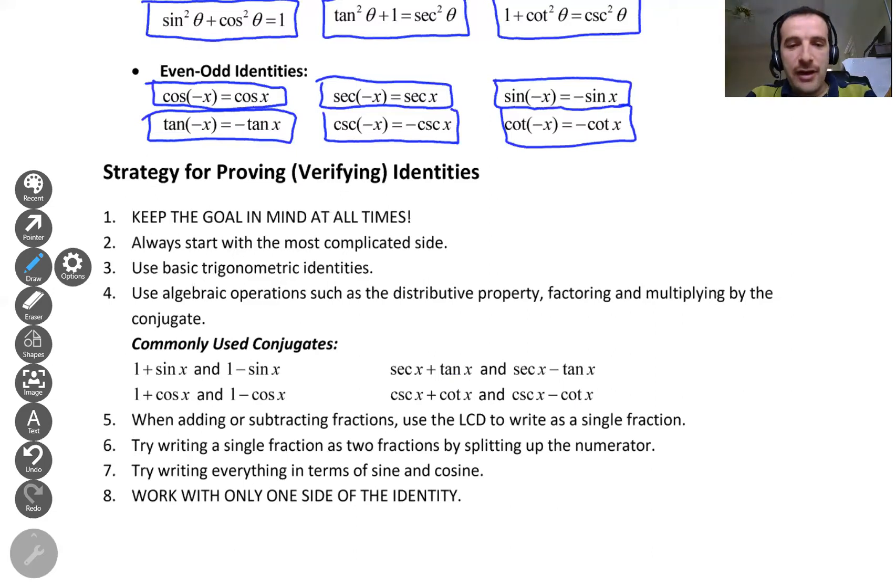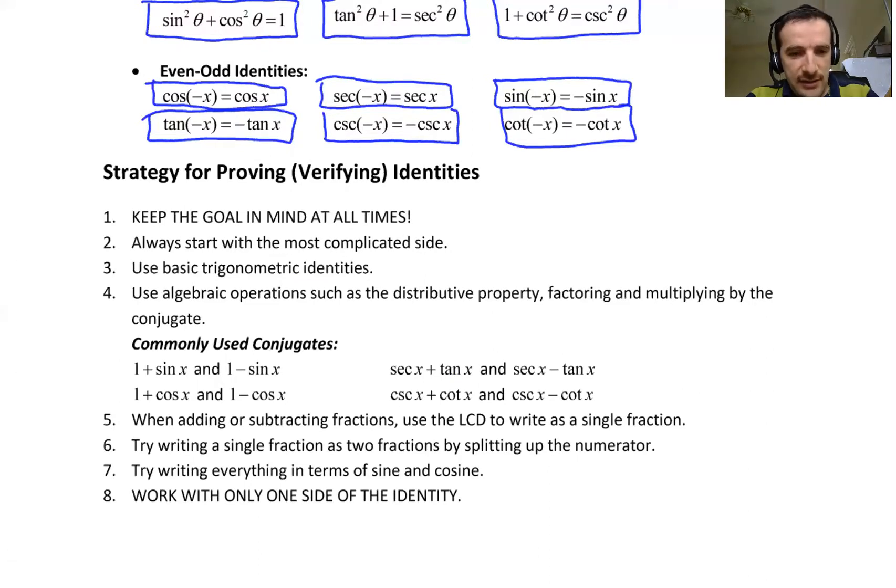And while trying to add and subtract fractions, you can use of course these common divisors to write them as a single function. And try to write a single fraction as two fractions by splitting up the numerator. These are all nice tricks. You will find them very useful in the coming examples. But I'm just going over them quickly. Try writing everything in terms of sine and cosine.